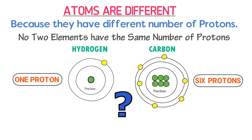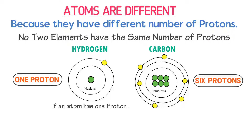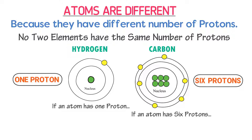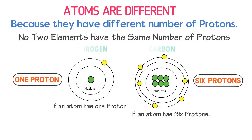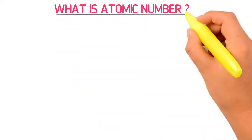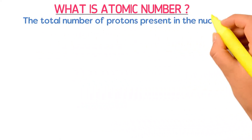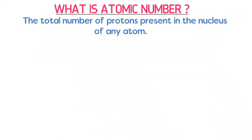Now what have we learnt from this example? We have learnt that if an atom has only one proton, it will indicate hydrogen atom. If an atom has six protons, it will indicate carbon atom. Therefore, we say that atoms are different from each other. Now what is atomic number of an element? The total number of protons present in the nucleus of any atom of an element is called the atomic number of that element.